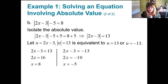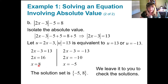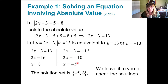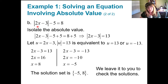Let's plug in both answers to check. For x equals 8: 2 times 8 is 16, minus 3 is 13, the absolute value of 13 is 13, and 13 minus 5 is 8. Check. For x equals negative 5: 2 times negative 5 is negative 10, minus 3 is negative 13, but the absolute value of negative 13 is 13, and 13 minus 5 is 8. Both answers check out.